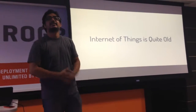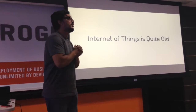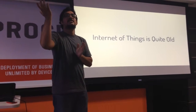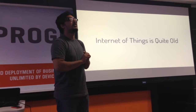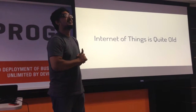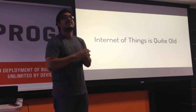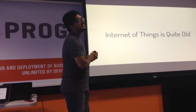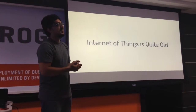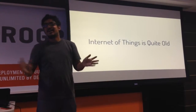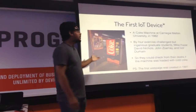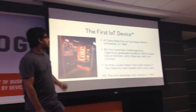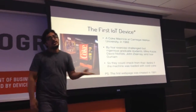How old do you think is IoT? Since how many years or decades was IoT there? Ten years? Five years? It's been there since 30 years. The first documented IoT device was first implemented in 1982 in Carnegie Mellon University by four graduates of the college.